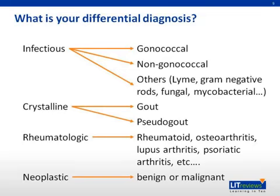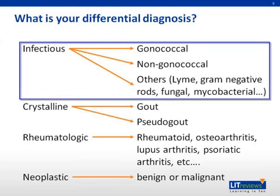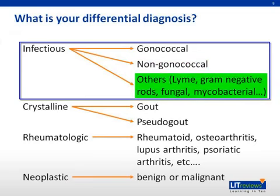So what's in our differential diagnosis? In a young, otherwise healthy patient with acute monoarticular arthritis, infectious etiologies should be at the top of our list. These are generally broken down into two major categories: gonococcal and non-gonococcal. Other etiologies include Lyme disease, although this patient denies any history of camping or tick bites, as well as gram-negative rods, fungi, and mycobacterial infections. These last three are most typically seen in immunocompromised patients, and we have no reason to suspect our patient is immunocompromised based on our history and physical.